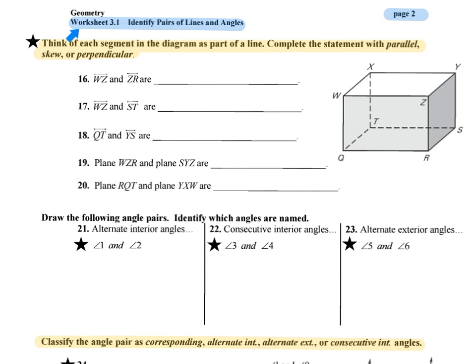All right, gang, we are working on worksheet 3.1, identifying pairs of lines and angles. We're on page two. These first questions are asking us to think about each segment in the diagram as part of a line. Complete the statement with parallel, skew, and perpendicular.